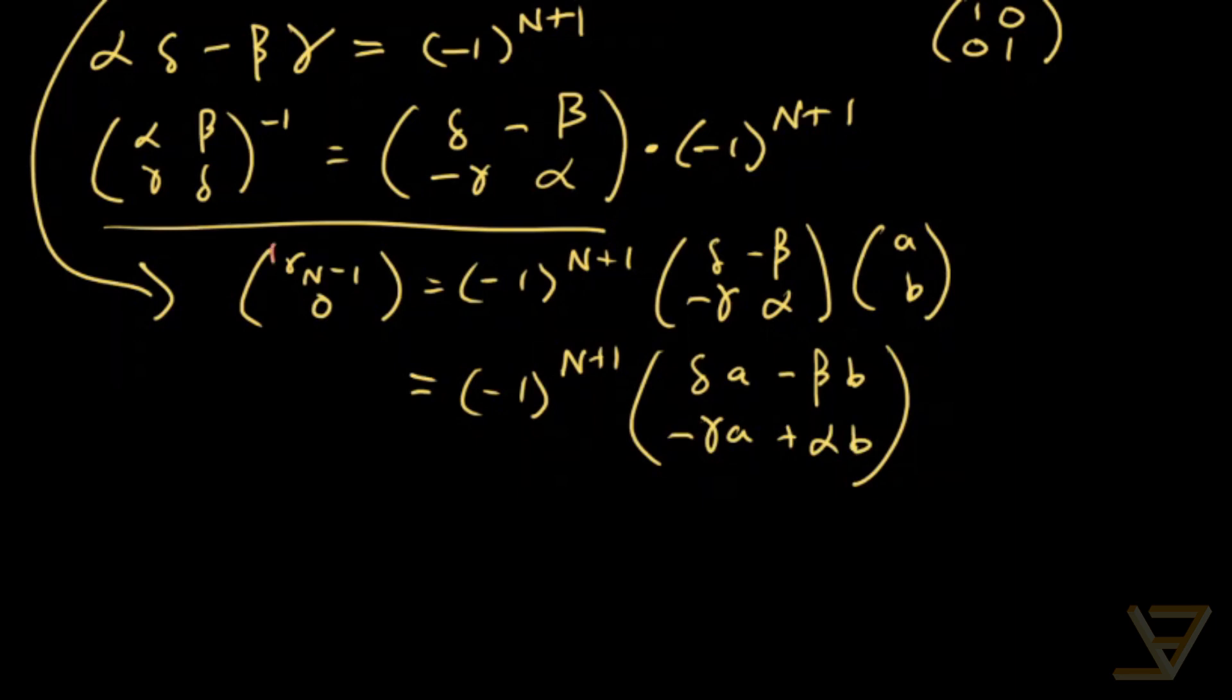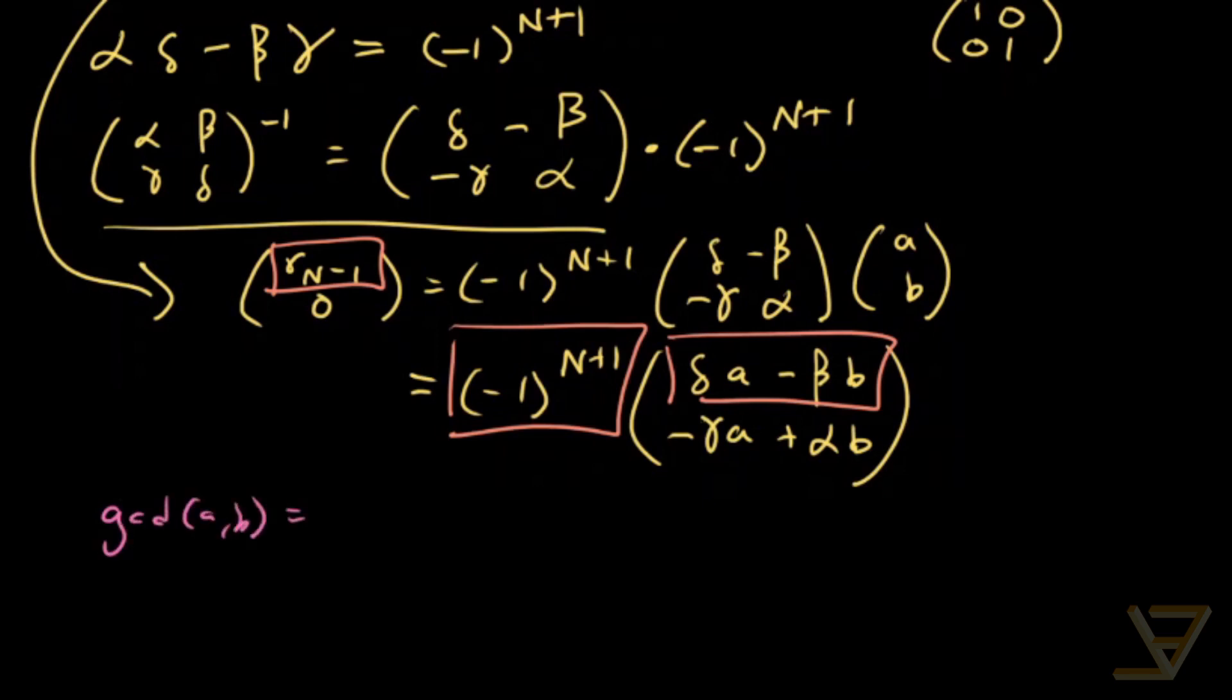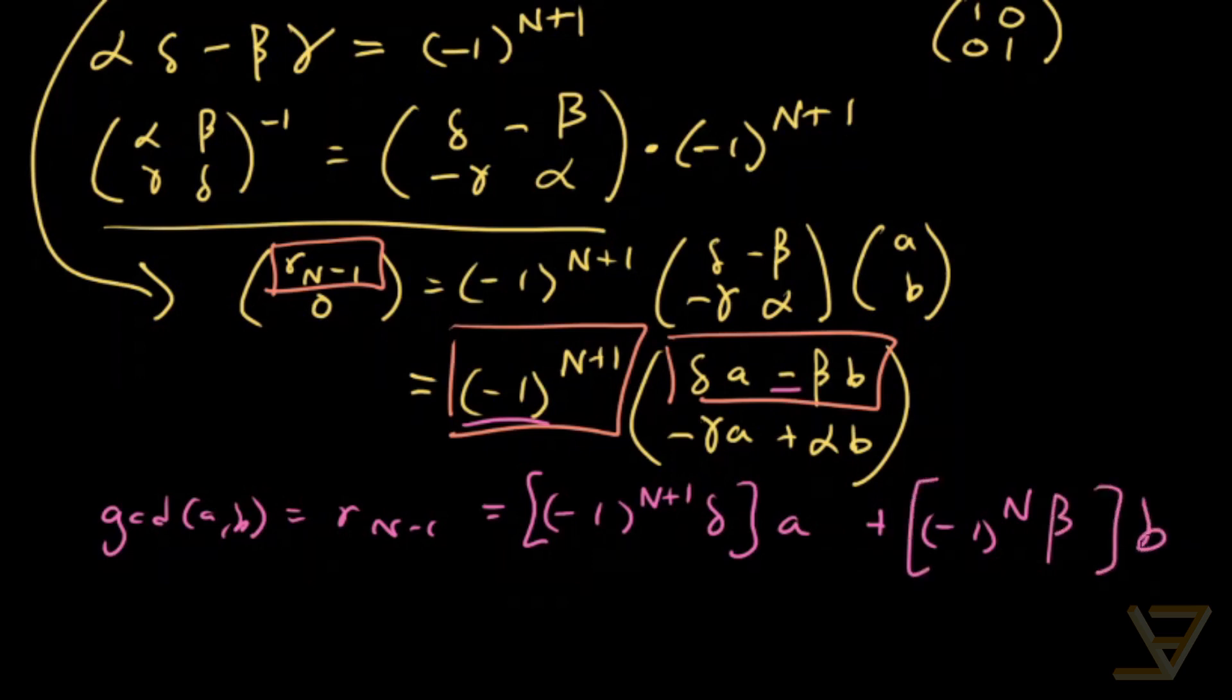And so, what that means is that r(n-1) is equal to this times this. So, therefore, gcd of a and b is equal to r(n-1), which is equal to negative one to the n plus one delta times a plus negative one to the n, because there's a negative here and a negative here, beta times b. And so, this is equal to x and this is equal to y.